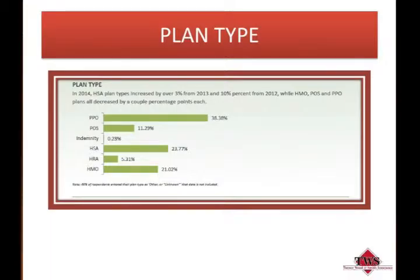This graphic reflects the percentage of plans by type in the Ziway study. PPO plans still represent the largest percentage, followed by HSA and HMO. These three plan types make up 83 percent of all plans provided to employees. HSA plans increased by over 3 percent from 2013 and over 10 percent from 2012, while HMO, point-of-service, and PPO plans all decreased. Most employers — 55 percent — offer one plan; 28.6 percent offer two plans; and 16 percent offer three or more.